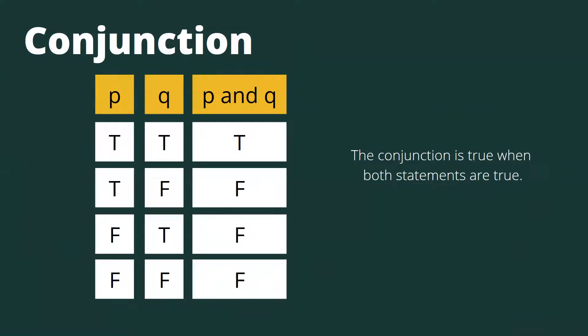Another one you might encounter in the truth table is conjunction. The conjunction is true when both statements are true. Given two statements, p and q, you want to get p and q. The first case: both true, that would be true. True and false, that would be false. False and true, that would be false. And both false would be false. That's how it works when it comes to conjunction.